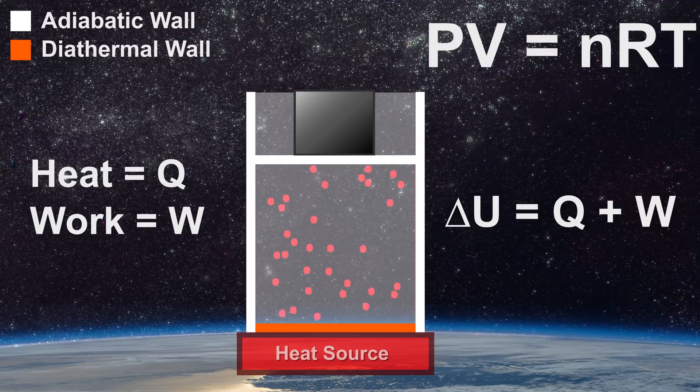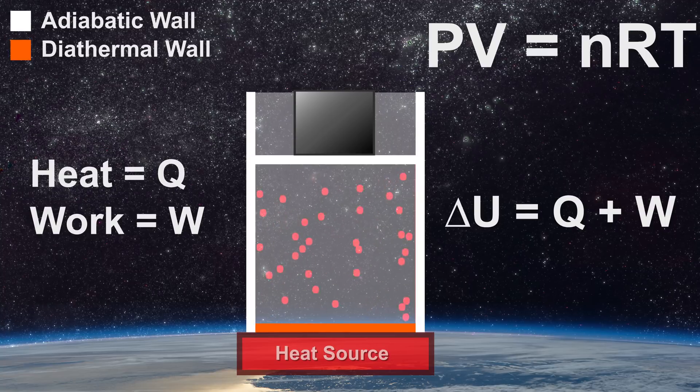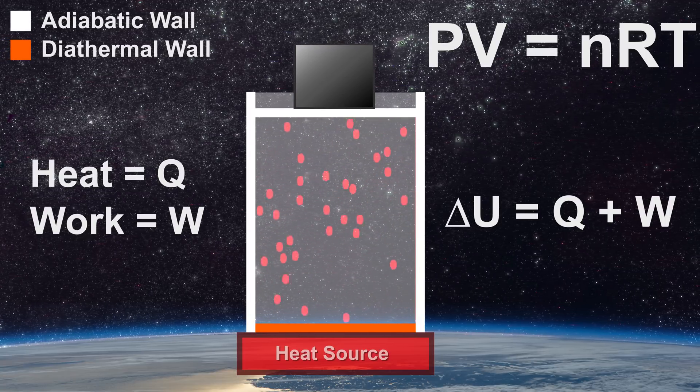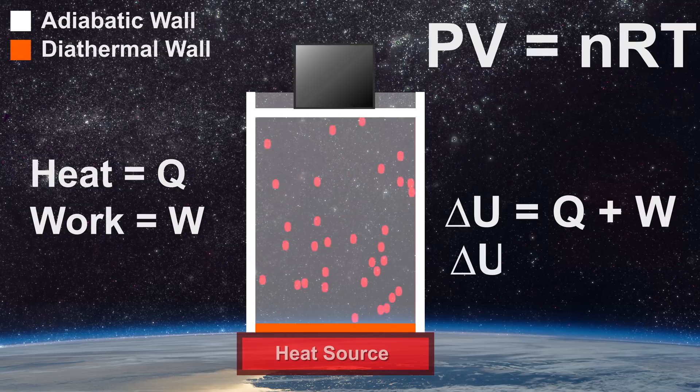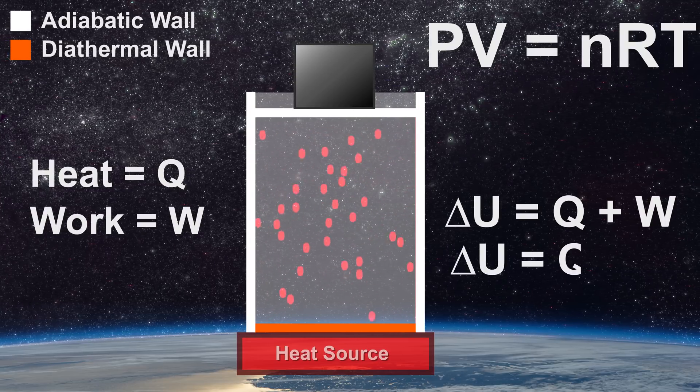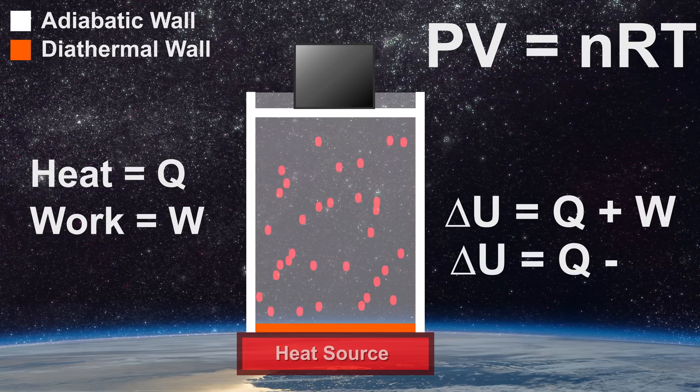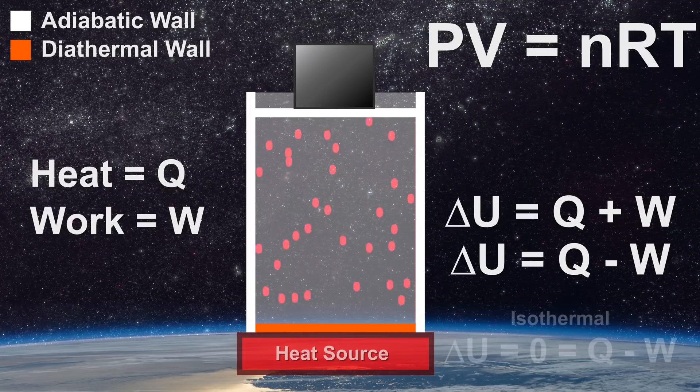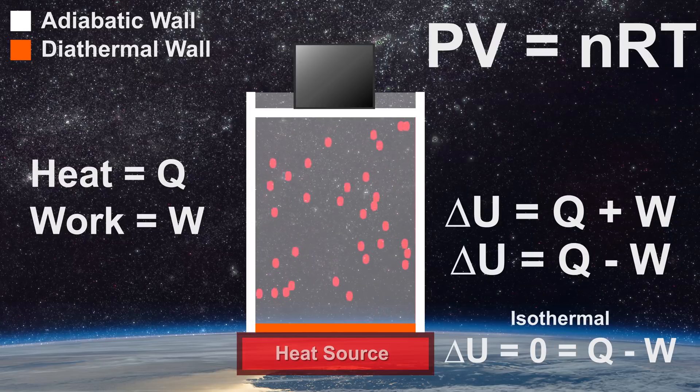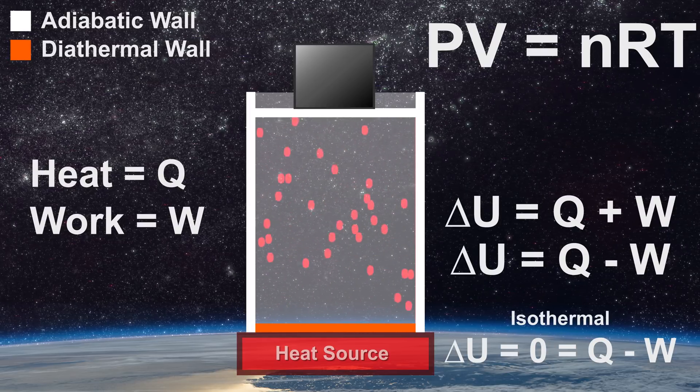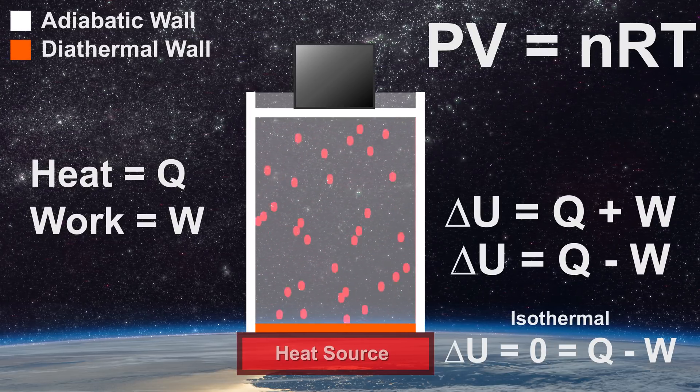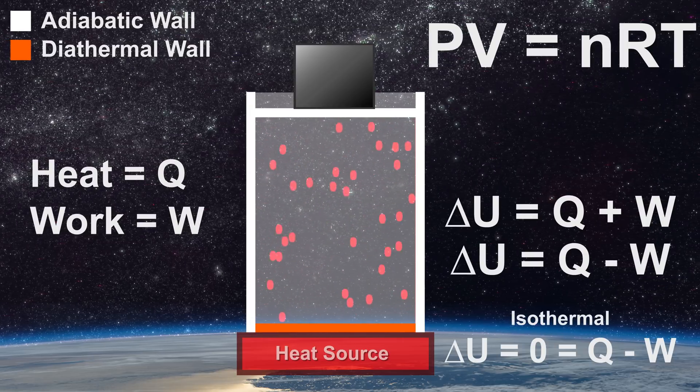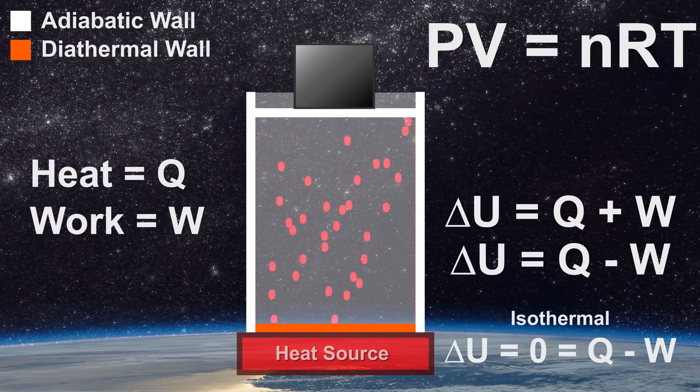It is also possible that work is done by the system if the piston raises the iron cube. In that case, we can write that the change in internal energy will be equal to the heat Q of the system minus the work done by the system W. This is what happens in an isothermal process. Heat enters the system equal to the work performed and no change in internal energy occurs. The volume increases and the pressure decreases such that the temperature stays constant.